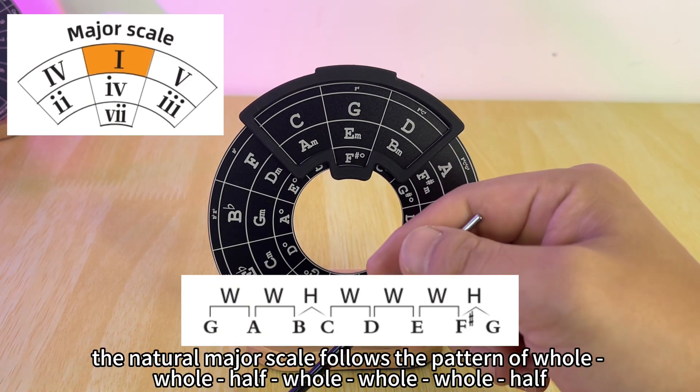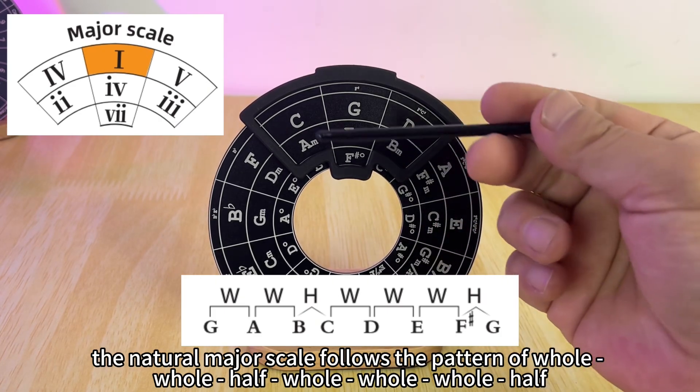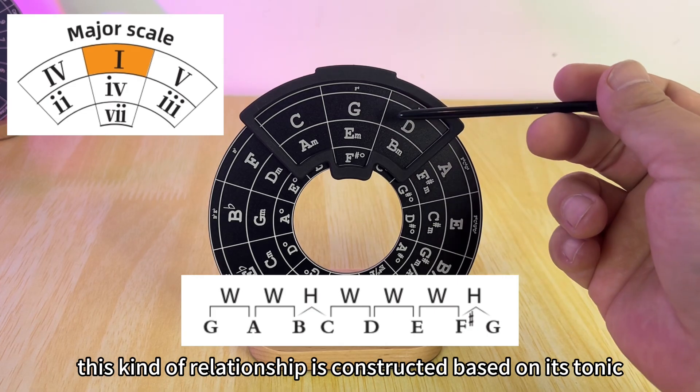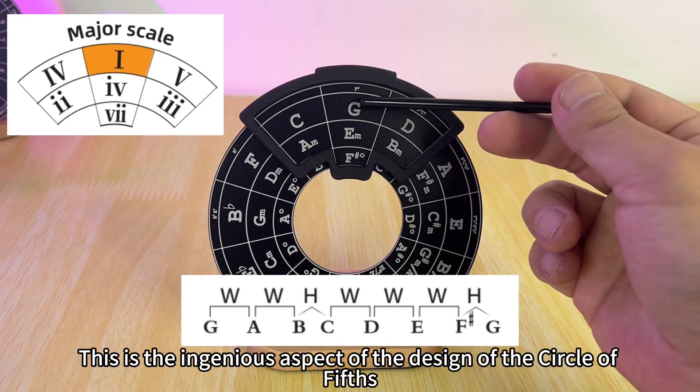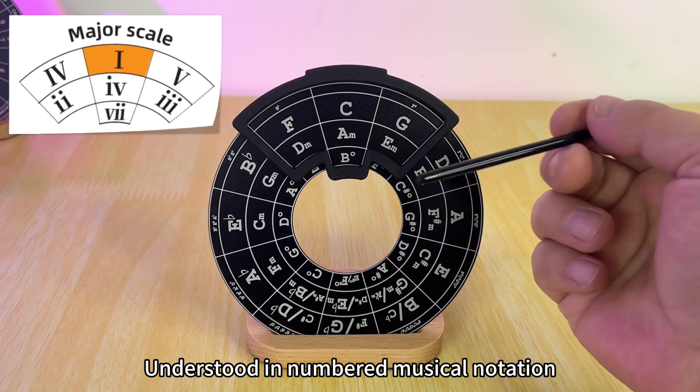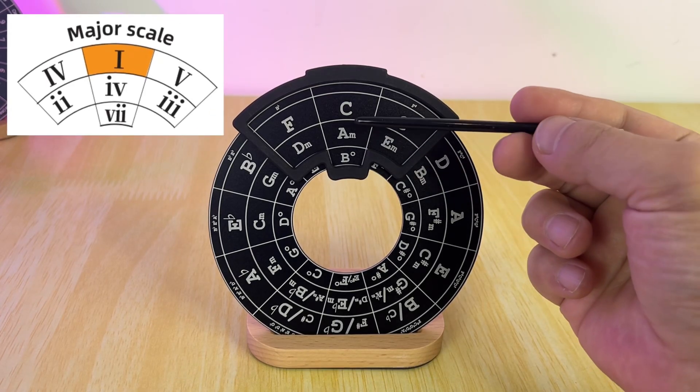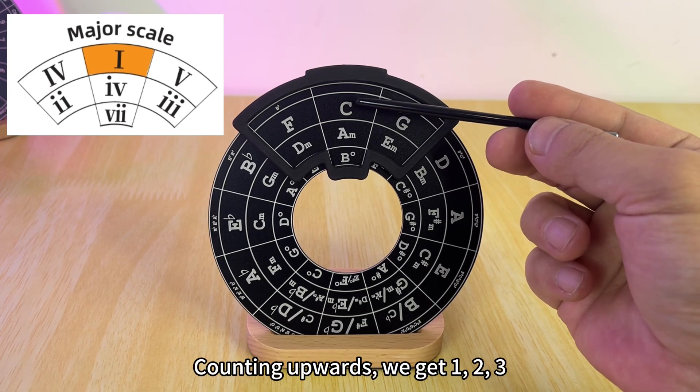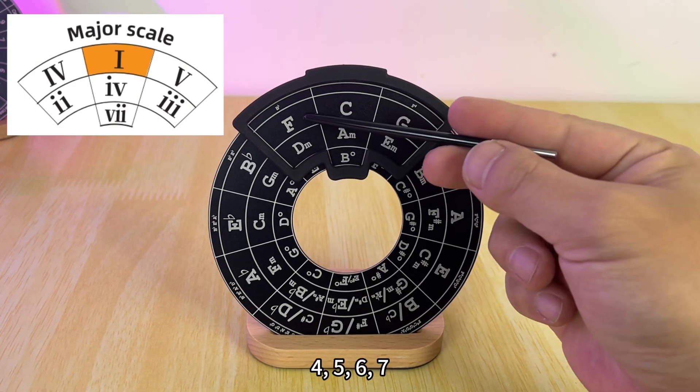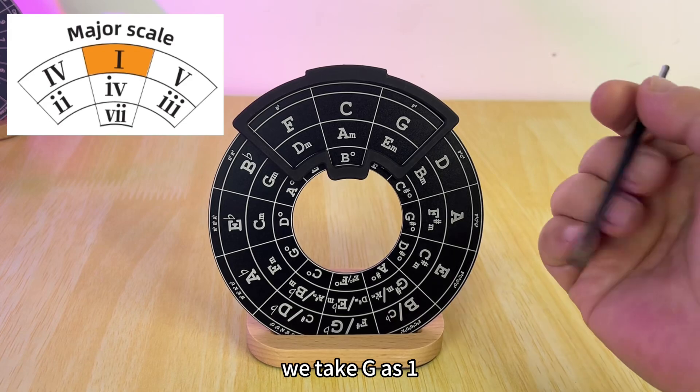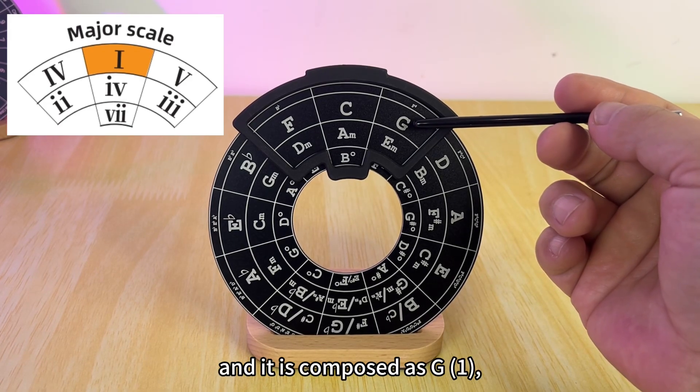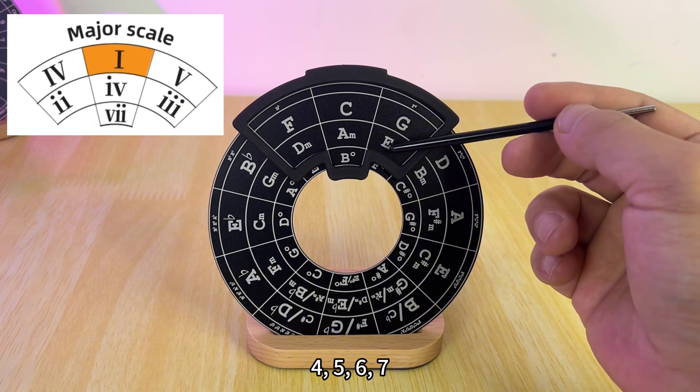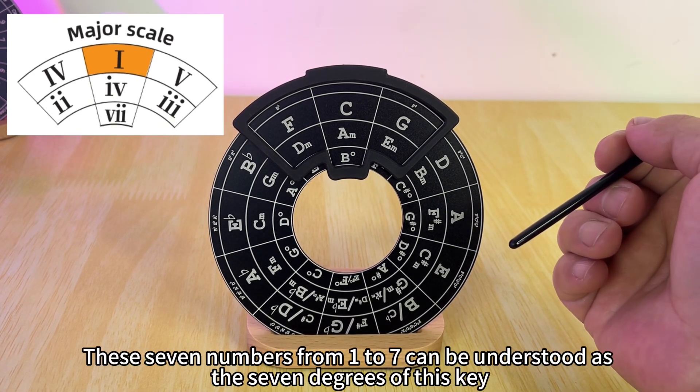So the natural major scale follows the pattern of whole-whole-half-whole-whole-whole-half. In each key this kind of relationship is constructed based on its tonic. This is the ingenious aspect of the design of the circle of fifths. Understood in numbered musical notation, in each key starting from the tonic we consider the tonic as one, counting upwards we get 1, 2, 3, 4, 5, 6, 7. In the G major key we take G as one, and it is composed as G, A, B, C, D, E, F sharp. These seven numbers from one to seven can be understood as the seven degrees of this key.